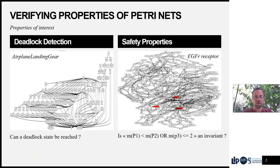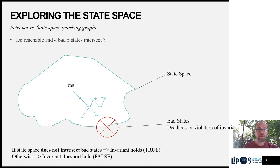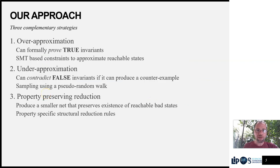We are interested in two kinds of properties: deadlocks and safety properties, where we have a certain invariant we want to check that concerns a subset of the places of the net. We are looking at the state space of the net and trying to find bad states that are part of the reachable state space. If we can reach such a bad state, then the invariant is not preserved. We introduce three complementary strategies to address this problem.